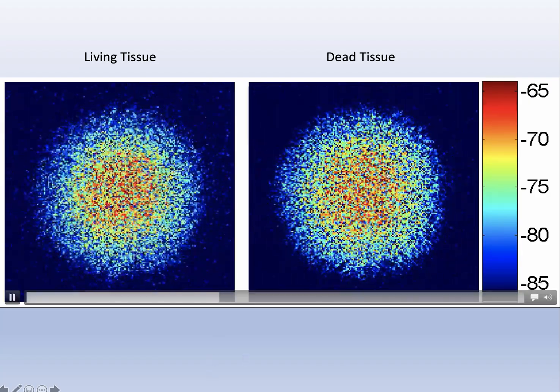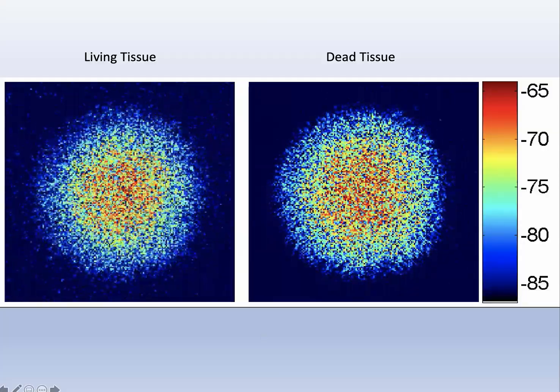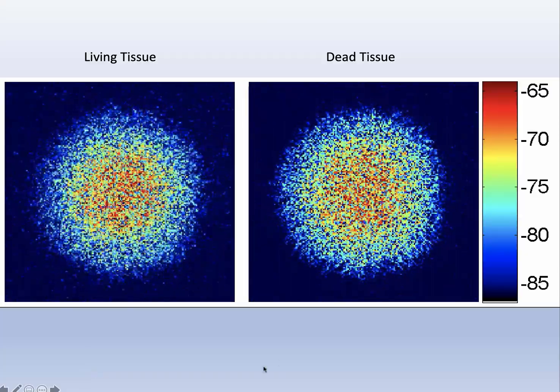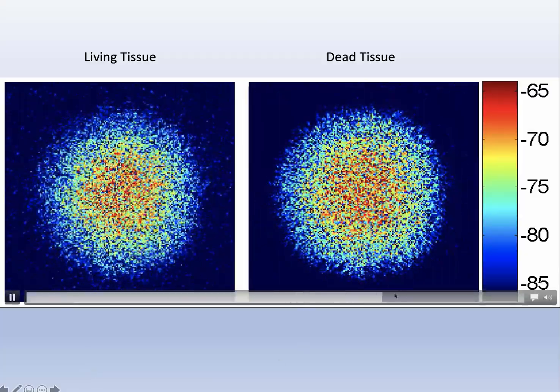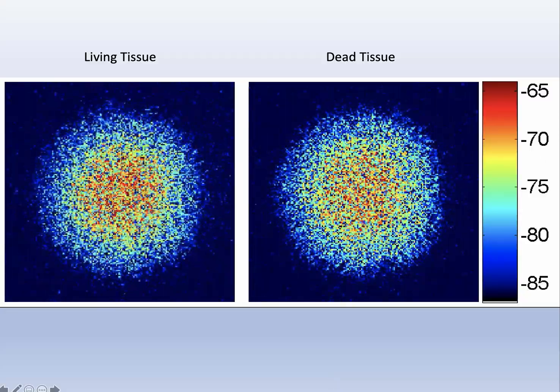For instance, one very simple thing we can do is look at the difference between living tissue and tissue that has been hit with a poison. In the living tissue, there's all this activity going on. In the dead tissue, you see a little bit of shimmering on the outside.